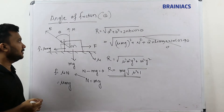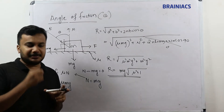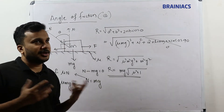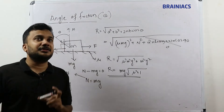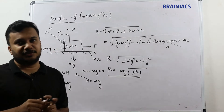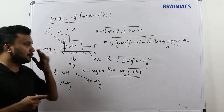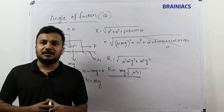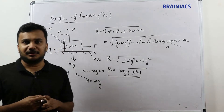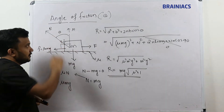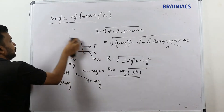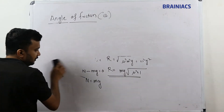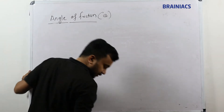So the Angle of Friction is always the angle between the resultant of friction force and normal reaction, with the normal reaction. Remember this concept — it won't be asked as a standalone question, but it appears as part of numerical problems. You can pause the video to take notes.